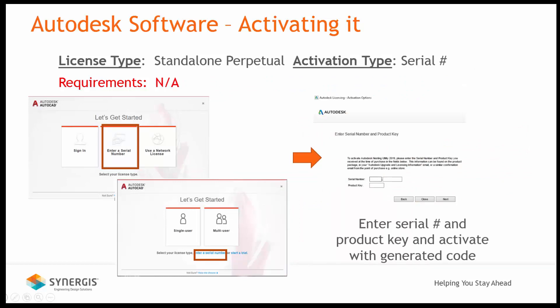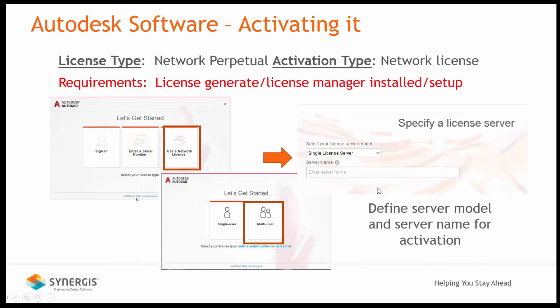If you have a standalone perpetual license, the activation type is serial number: you would pick 'Enter Serial Number' from the 'Let's Get Started' dialog or the link below the single user/multi-user button, enter your serial number and product key, and then it will activate based on your generated code. Finally, if you have a network perpetual license, you would pick 'Use Network License' or the multi-user option and then specify your license server information.